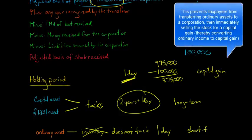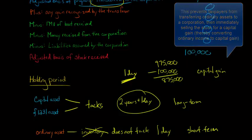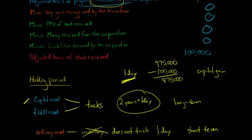So it matters how the assets are classified. If you end up with multiple types of assets — some capital assets, some Section 1231, and some ordinary assets — it can get really complicated. You would split the holding periods among the different shares, so some shares could be short-term and some could be long-term.